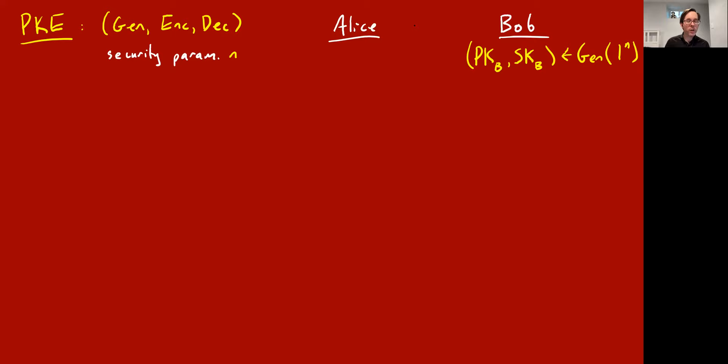Public key encryption goes like this — and it's exactly like RSA if you know RSA. Bob, when he wants to start participating, runs the generation scheme with security parameter n, which might be a thousand or something, and he gets two keys: one is called the secret key and one is called the public key — pk and sk.